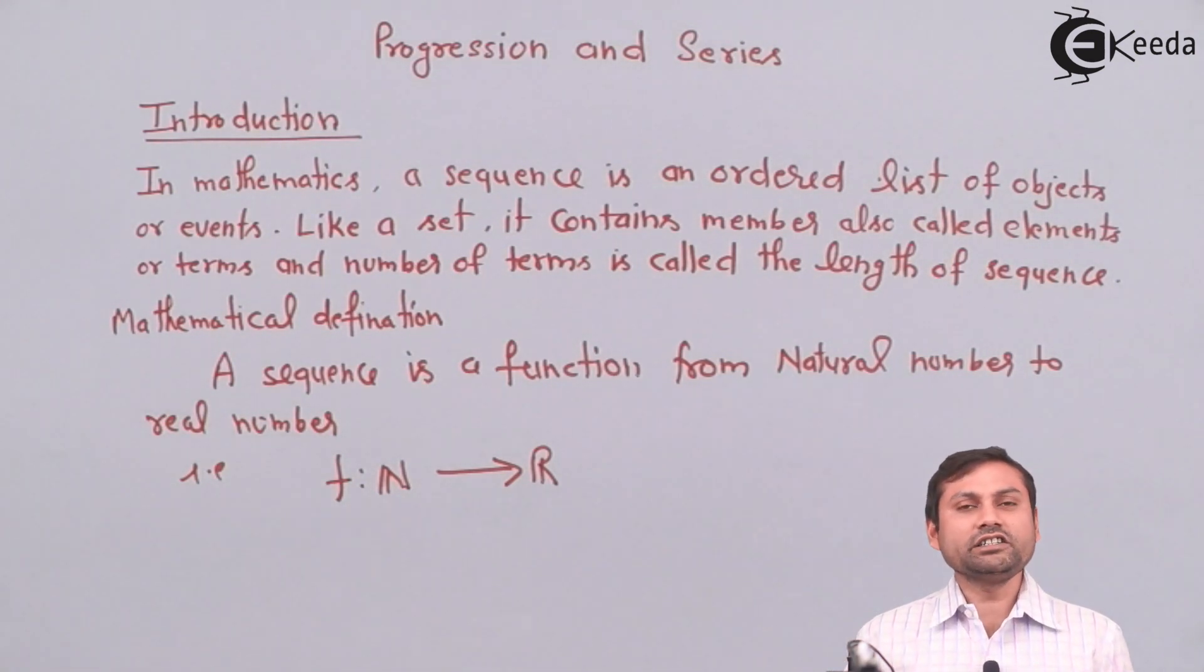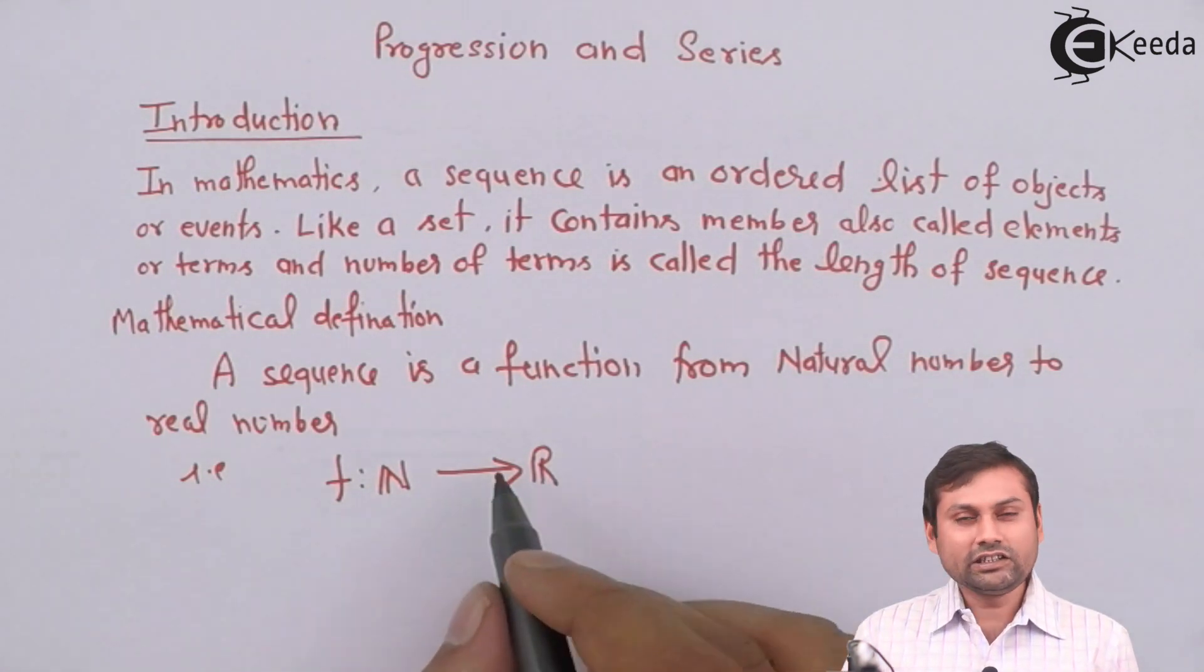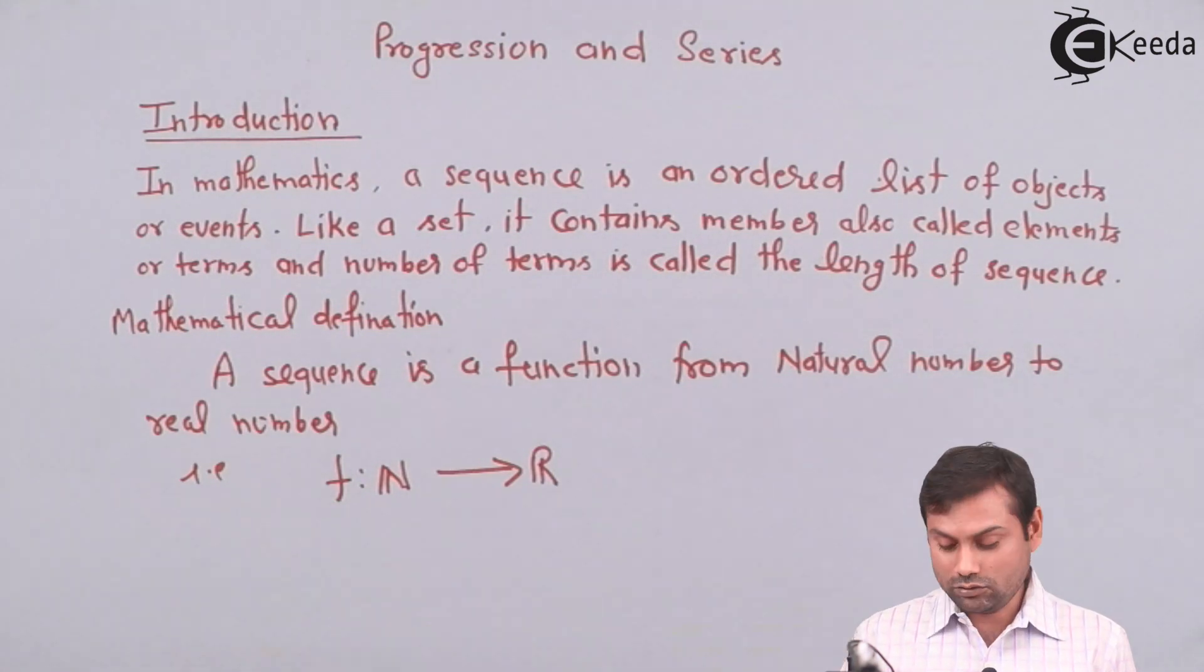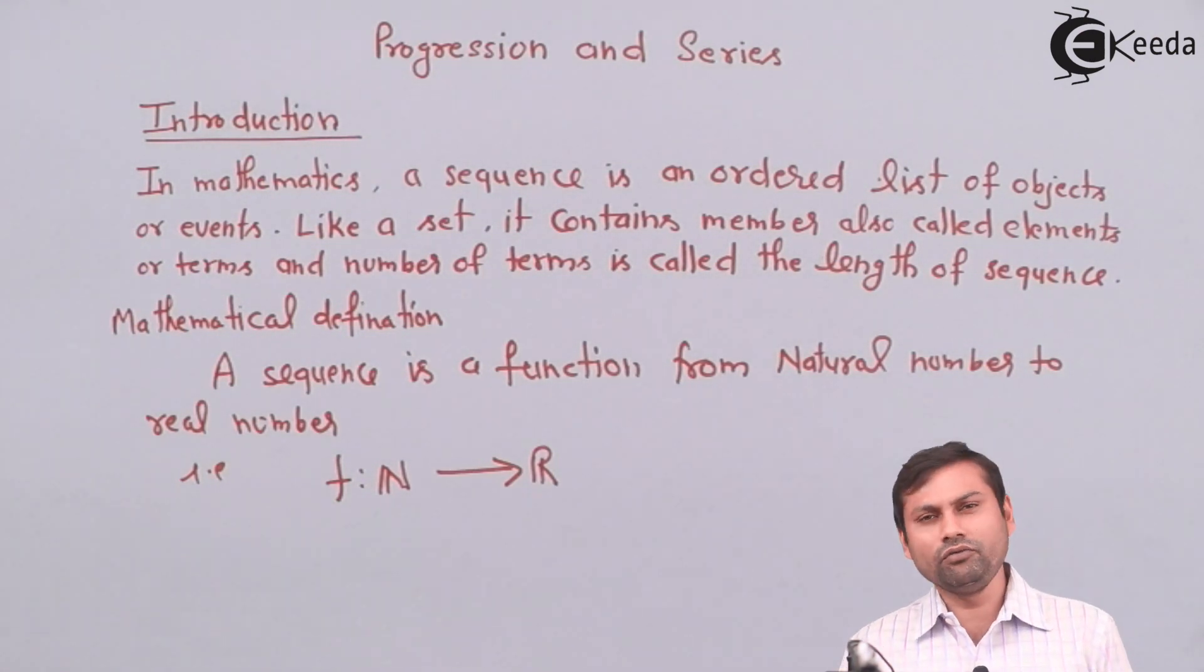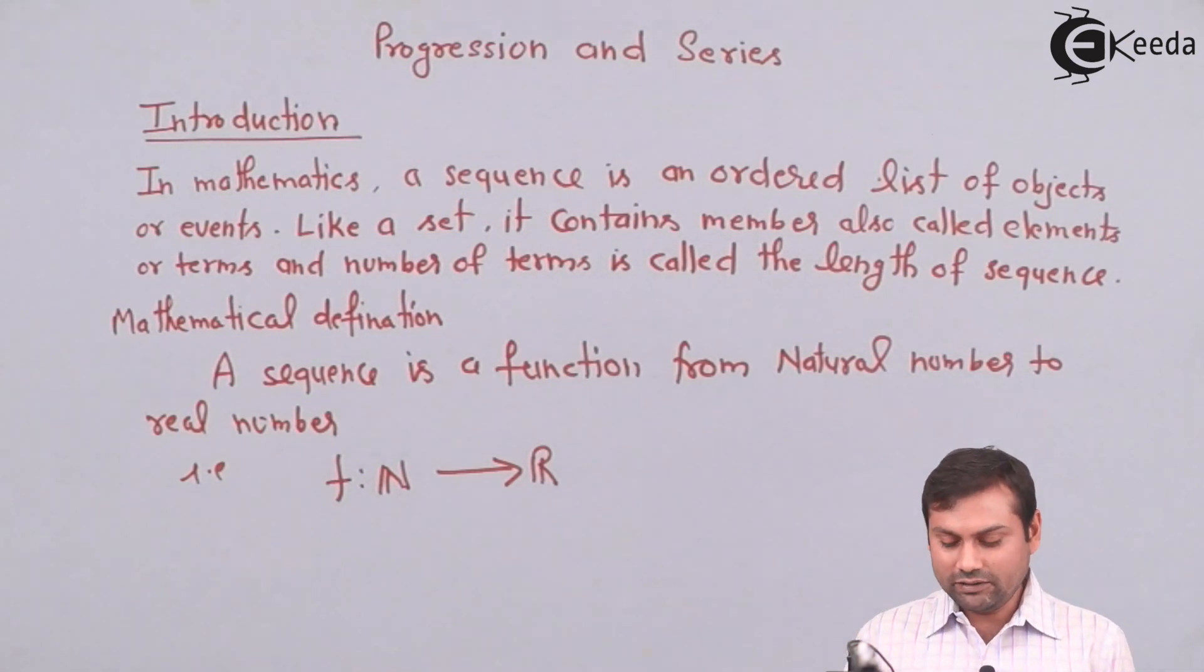When we have input, we always have natural numbers 1, 2, 3, 4, 5 values. So here we are only talking about real sequences. Such type of sequences is also called a real sequence because of the codomain set. Because your codomain set is a real number, obviously range could be subset of a real number.